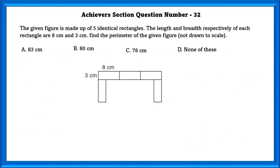Achievers Section Question Number 32. The given figure is made up of 5 identical rectangles. The length and breadth respectively of each rectangle are 8 cm and 3 cm. Find the perimeter of the given figure, not drawn to scale.